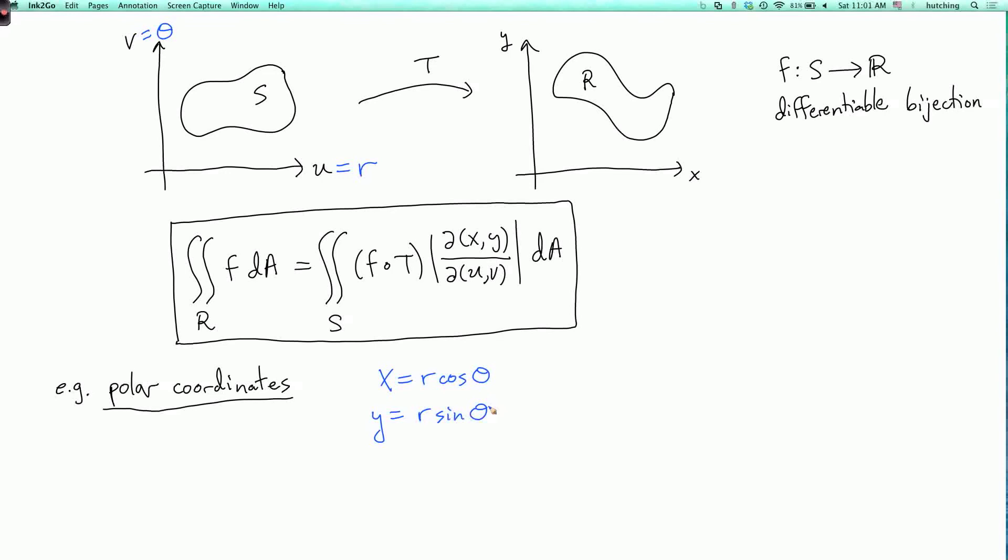What's the Jacobian? D of XY with respect to R theta. It's the determinant of dx/dr, dx/d theta, dy/dr, dy/d theta. Let's figure this out.